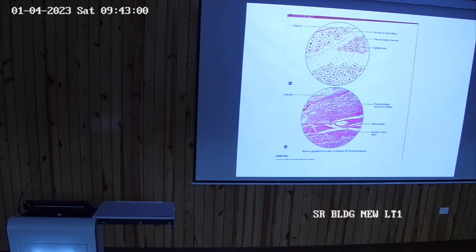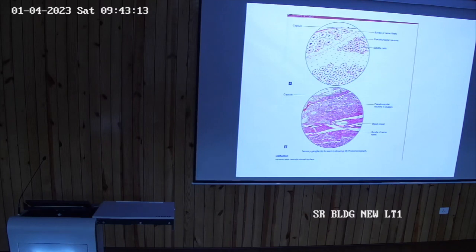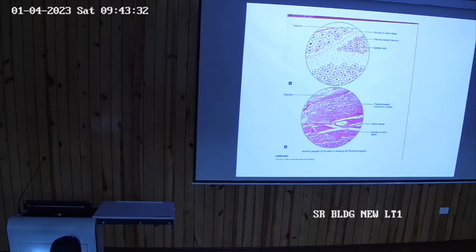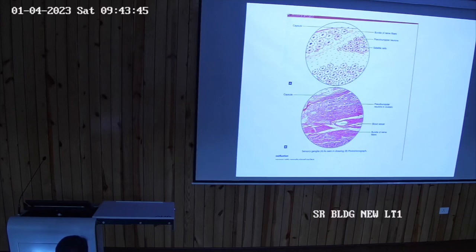The neuron cell bodies are present in bundles. You need to differentiate whether the ganglia is the dorsal root ganglion or sympathetic ganglia. First: cell bodies of neurons are collected in bundles. Second: the nucleus of the neurons is present in the center. Third: on the periphery are the satellite cells.